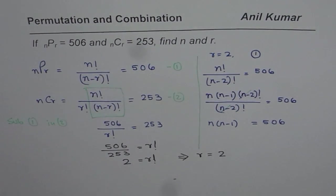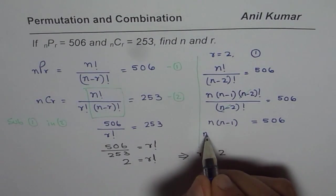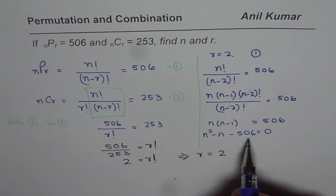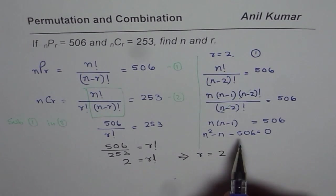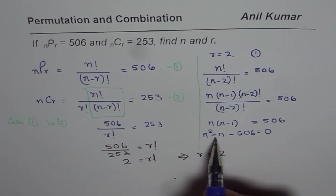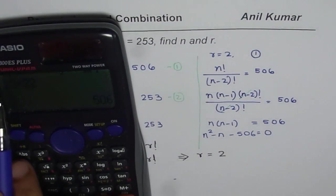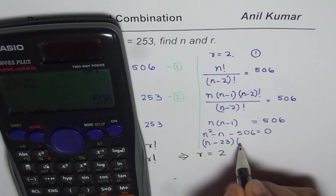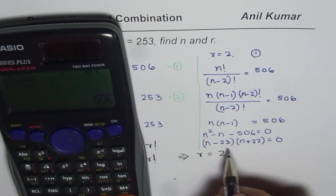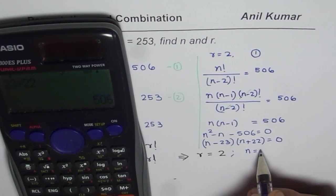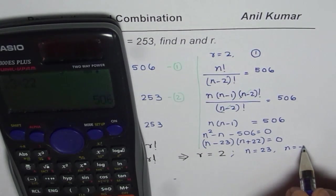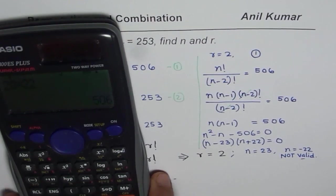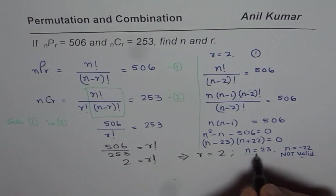But what we will do here is adopt the quadratic formula method. We can expand this: N squared minus N, bringing 506 to the left side, equals 0. Now we factor. We are looking for two numbers whose product is 506 and whose sum is minus 1. Since 23 times 22 is 506, we can write this as N minus 23 times N plus 22 equals 0. That gives the answer as N equals 23. N equals minus 22 is not valid, since N cannot be a negative number. So we get our answer as N equals 23.